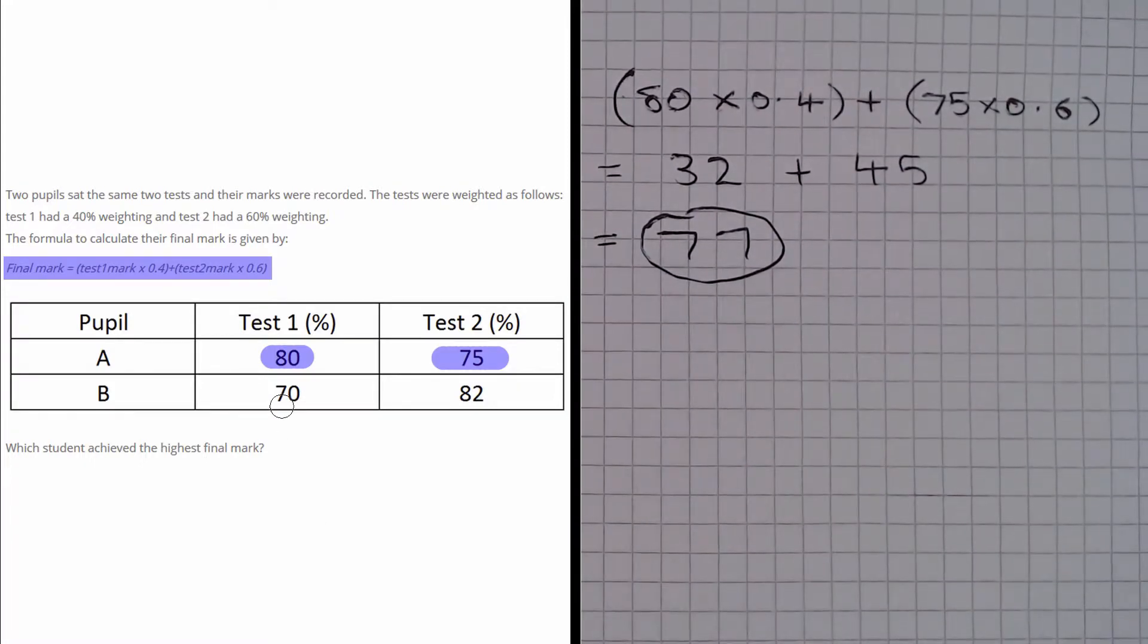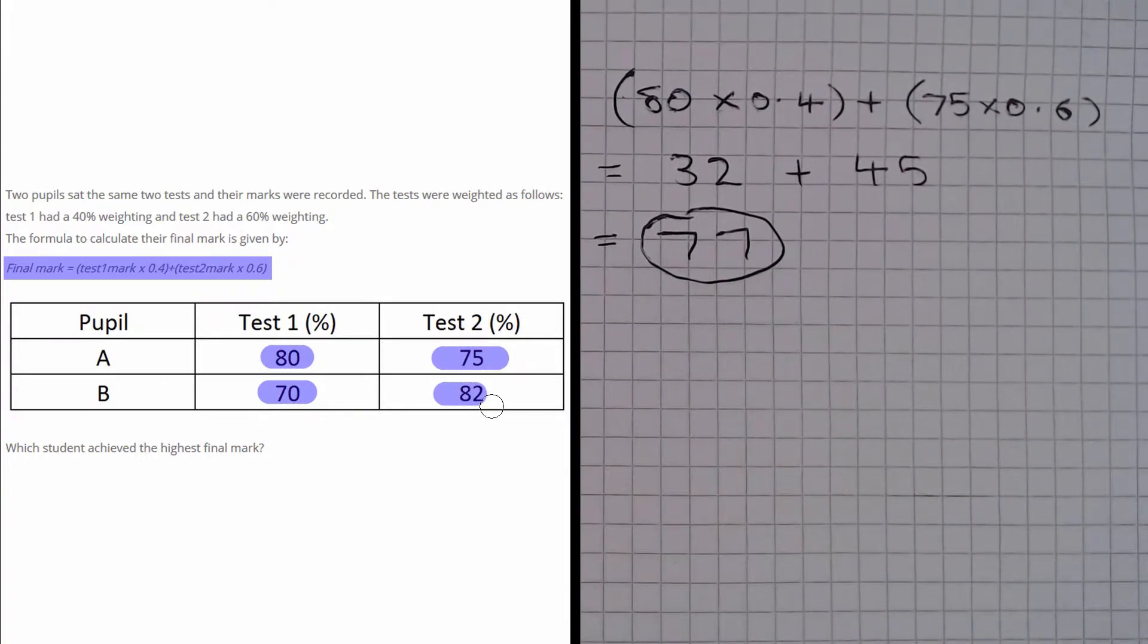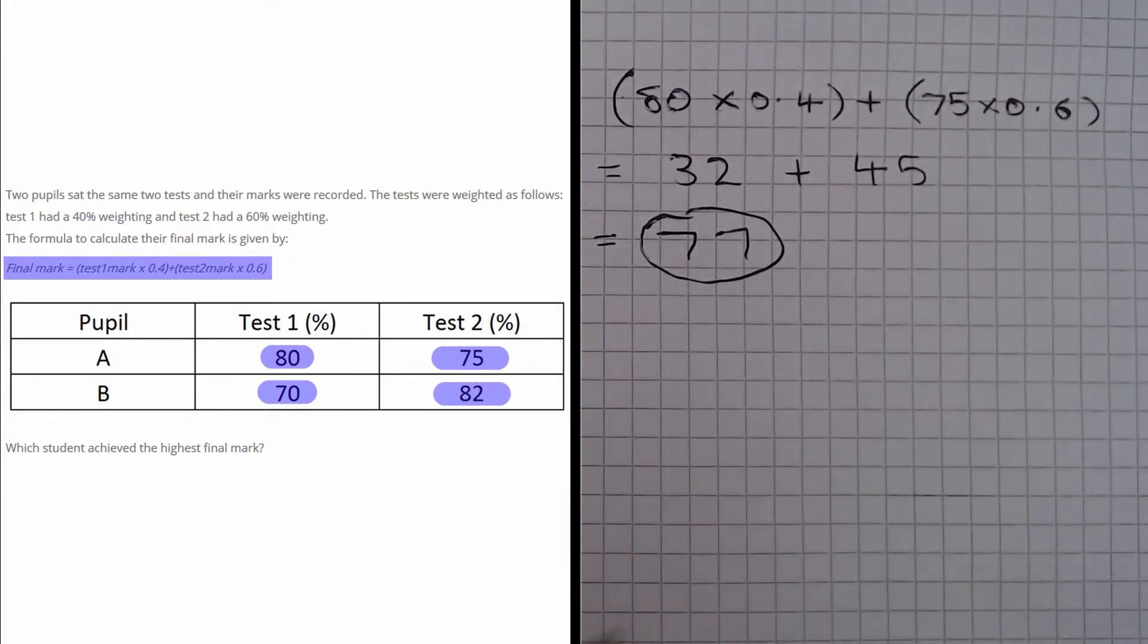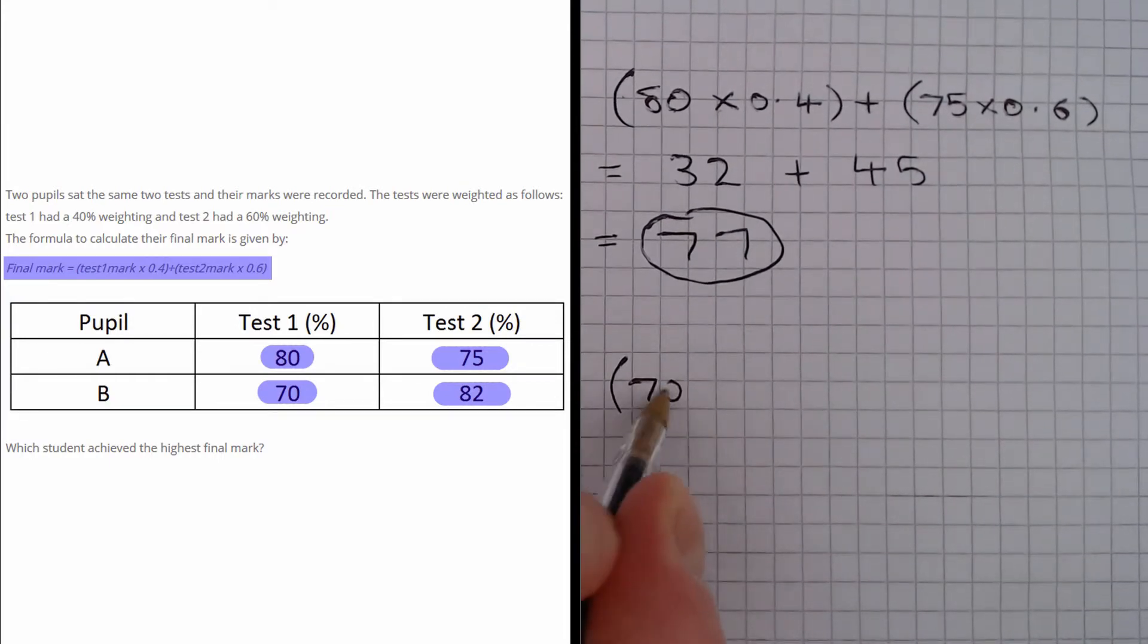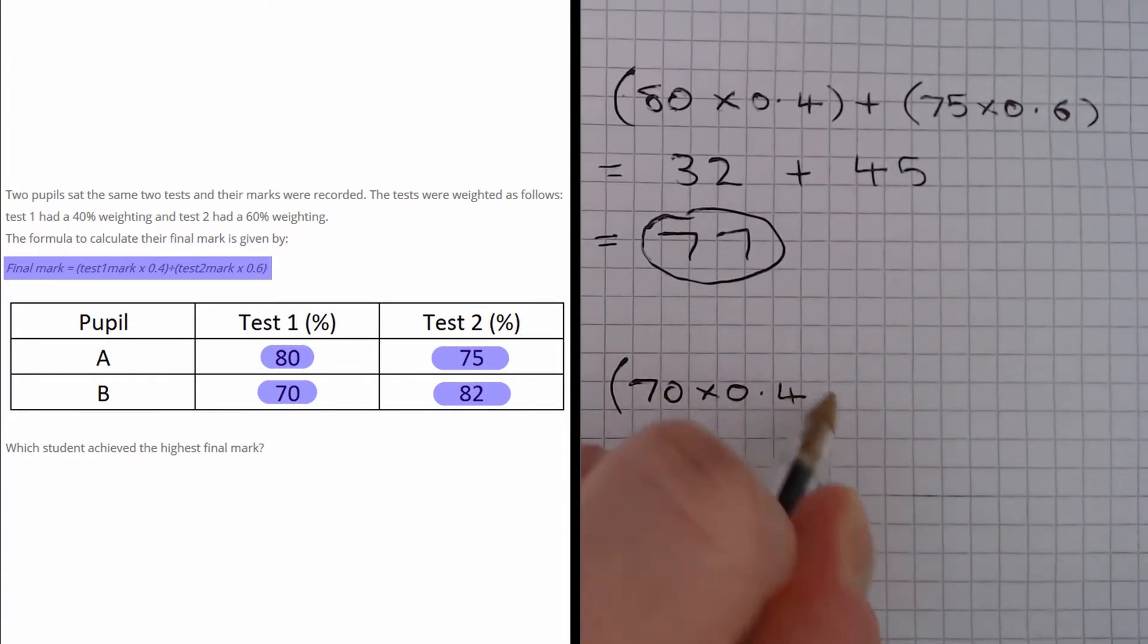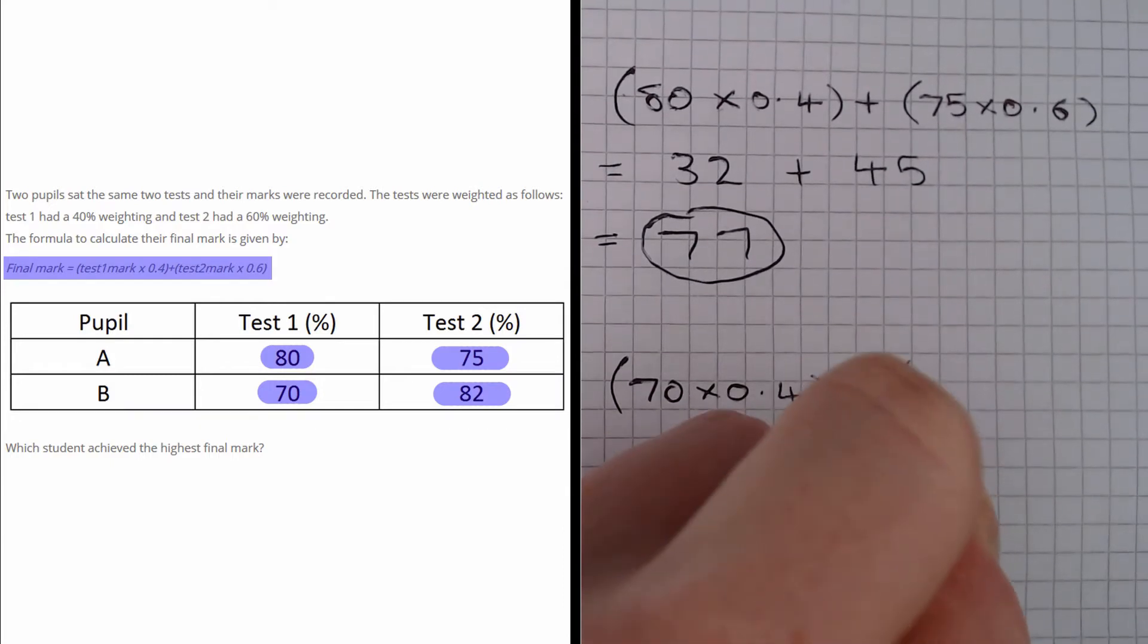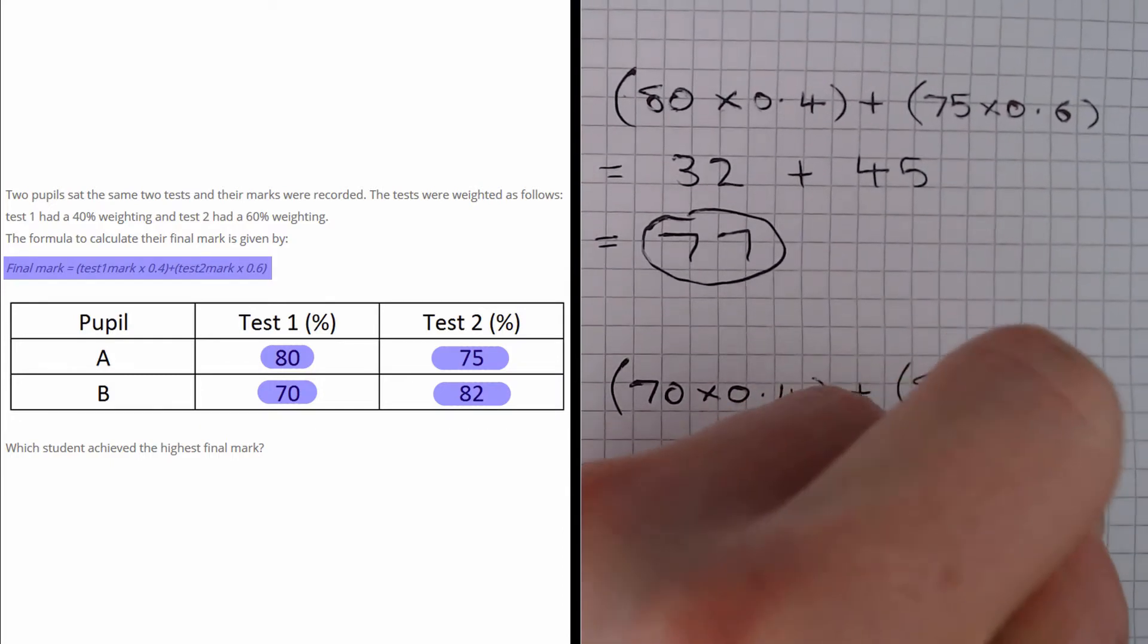Now what about pupil B? Pupil B had a test 1 mark of 70 and a test 2 mark of 82. The calculation we are going to do here is 70 multiplied by 0.4, and we add to that 82 multiplied by 0.6.